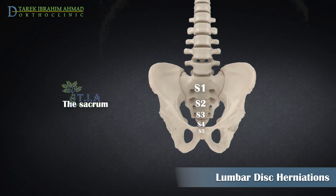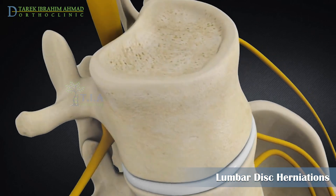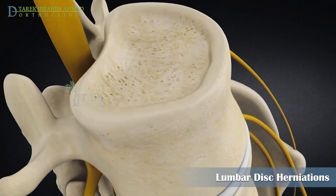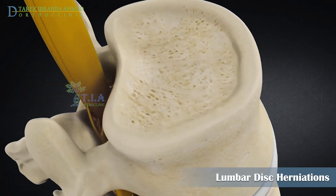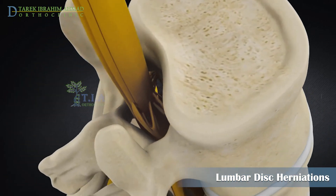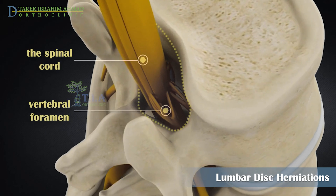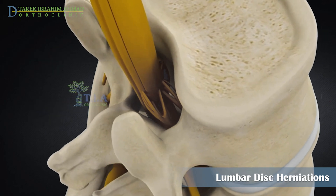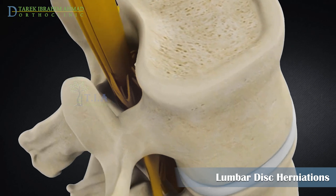The sacrum is a large triangular bone situated at the base of the vertebral column and comprises five fused vertebrae. Each of these bones contains a roundish hole that, when stacked in line with all the others, creates a channel that surrounds the spinal cord.